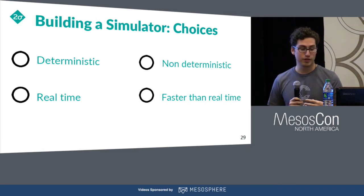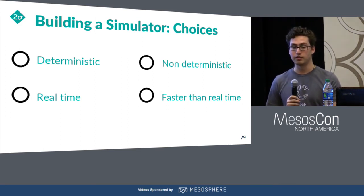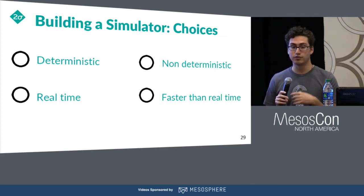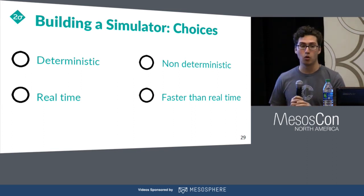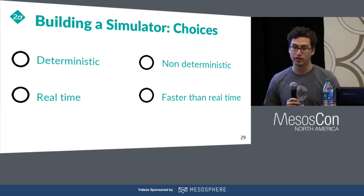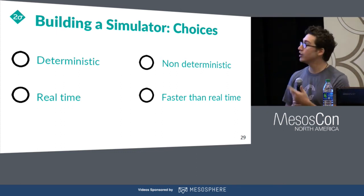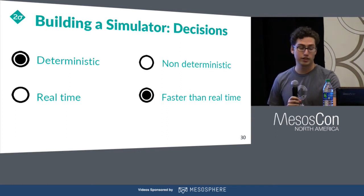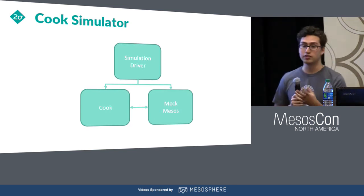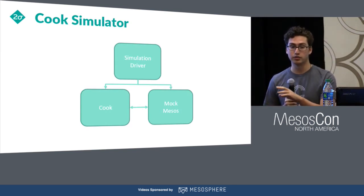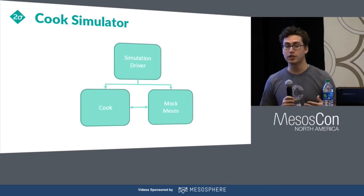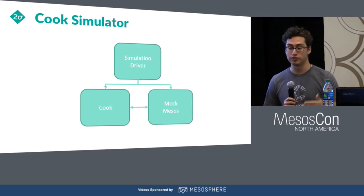Another choice is between having the system be real-time versus faster than real-time. If you have your production system and just make a copy of it, you're forced to have it be real-time. If you make it faster than real-time, you're able to run more experiments. What we chose to do is make our system deterministic and faster than real-time. At the highest level, this is what our simulator looks like: we have Cook and our mock of Mesos talking to each other, and we have the simulation driver that instantiates both, wires them up, and then drives the simulation forward.